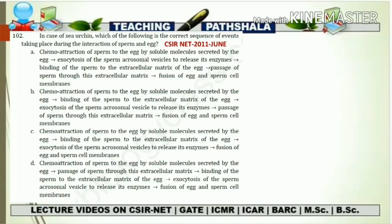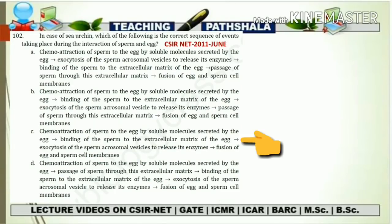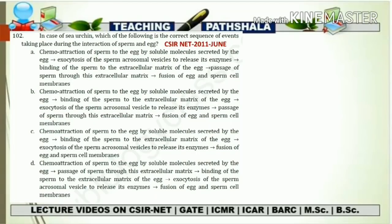Option B is wrong because it places binding to the extracellular matrix immediately after chemoattraction, skipping the acrosomal reaction. Option C is also wrong for the same reason — it incorrectly places sperm binding to the extracellular matrix before the acrosomal reaction. Option D is wrong because it places passage through the extracellular matrix right after the 'gamover' (acrosomal) reaction without the proper binding step. We can therefore eliminate options B, C, and D, confirming option 1 as the correct answer.